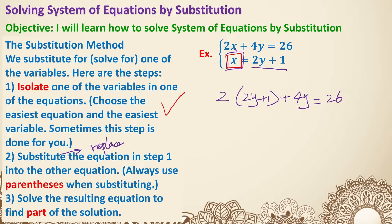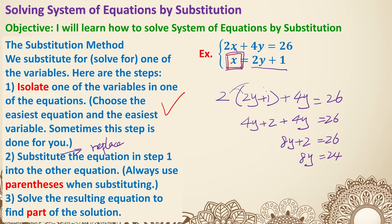Step 3 is to solve the resulting equation to find part of the solution. With this equation you can only find the answer for y. So solve it: 4y plus 2 plus 4y equals 26 — that's distribution. Combine like terms: 8y plus 2 equals 26. Subtract 2 on both sides: 8y equals 24. Divide both sides by 8: y equals 3.